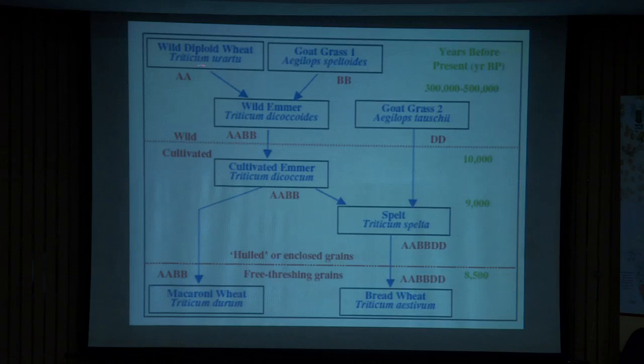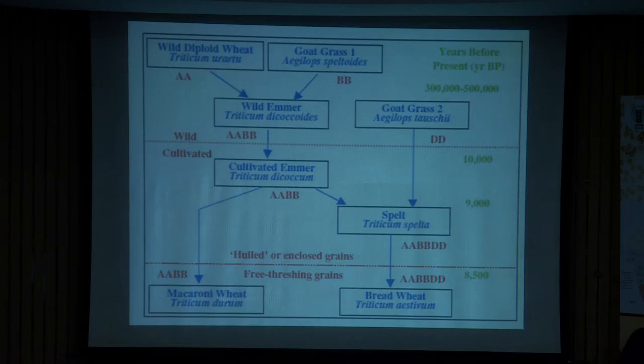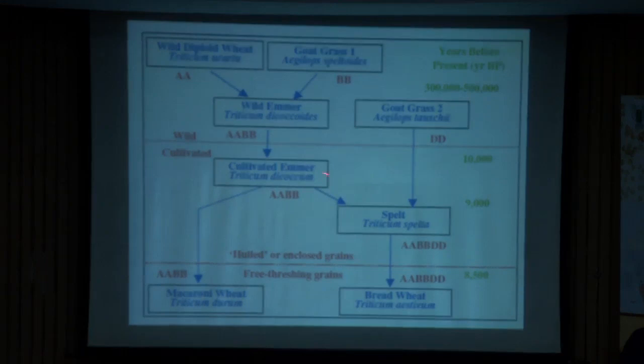The A-genome donor is Triticum urartu, and the B-genome donor is Aegilops speltoides. When they crossed together in nature, they led to tetraploid wheat with AABB genome, called dicocoides. When we started cultivating it, domestication led to Triticum dicoccum, which was cultivated around 10,000 BC.